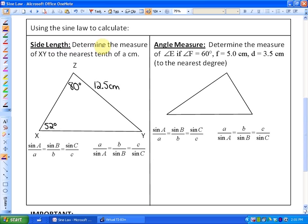The first question says, determine the measure of XY, so side XY, to the nearest tenth of a centimeter. So maybe what I'll do is call that side lowercase z because it's opposite uppercase Z. So here's lowercase z and uppercase Z, and what we always need for a sine law is to have some angle and its opposite side, which we do have. We have angle X and its opposite side here.